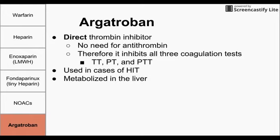Lastly, we have argatroban. Argatroban is also a direct thrombin inhibitor, meaning it binds directly to thrombin to inhibit it. Unlike heparin, there is no need for antithrombin. Argatroban affects all three coagulation tests, giving prolonged results on the TT, PT, and PTT. It is particularly useful in cases of heparin-induced thrombocytopenia, where you cannot use heparin, enoxaparin, or fondaparinux. Argatroban is metabolized and broken down in the liver, unlike some of the other drugs on this list.